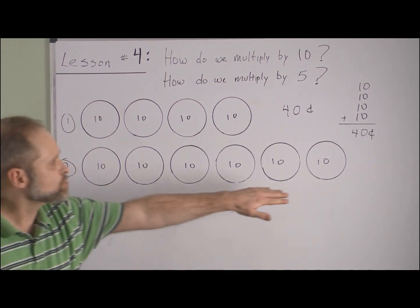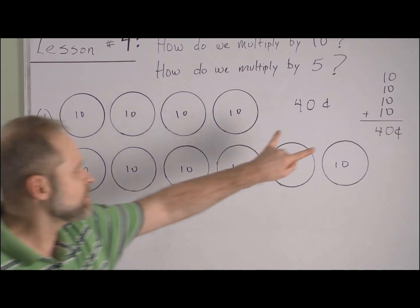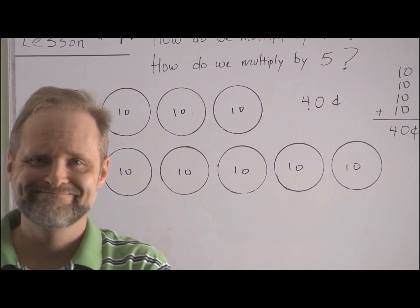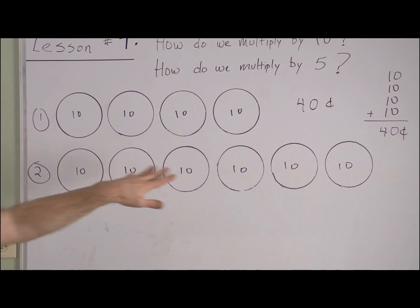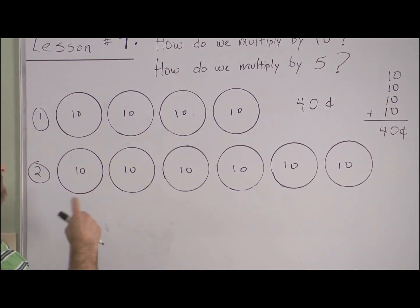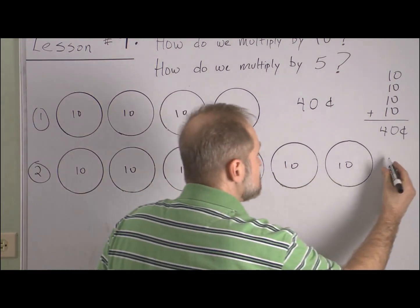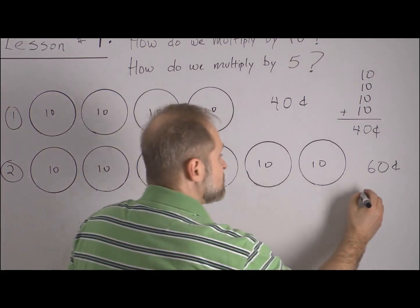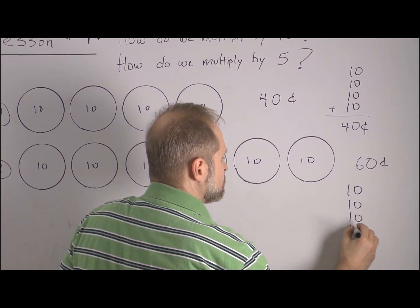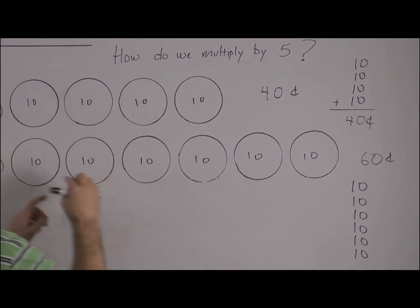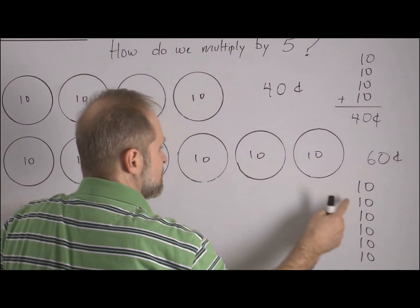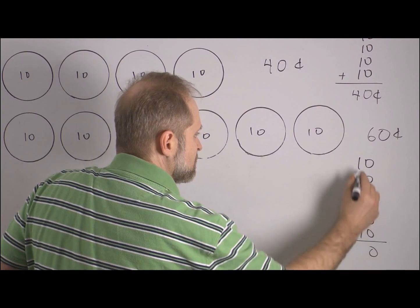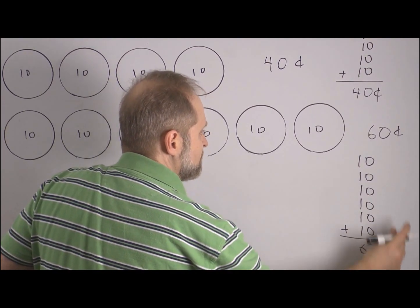Try number two the same way. I'll do it my way — skip counting: ten, twenty, thirty, forty, fifty, sixty — that's sixty cents. The other way is to write down one ten for each of the six dimes, then add them up. Adding the units first, then the ones, we get the same answer: sixty cents.